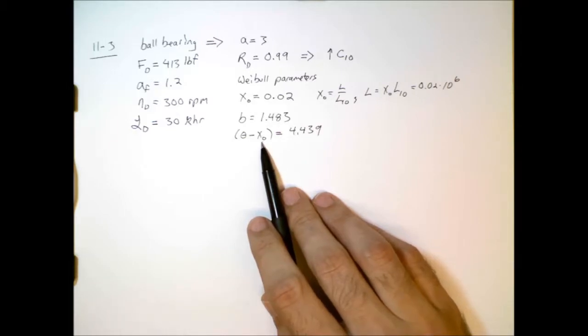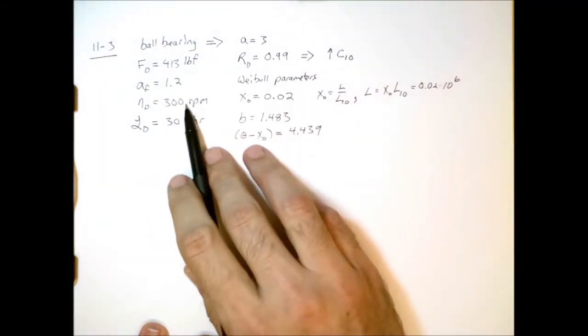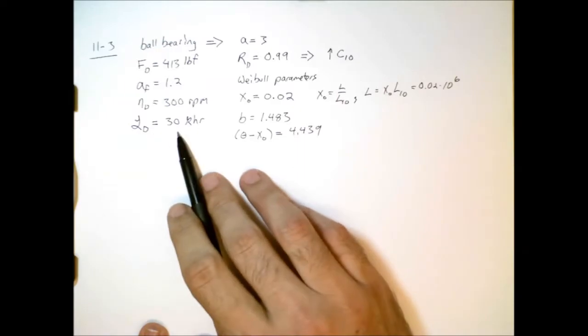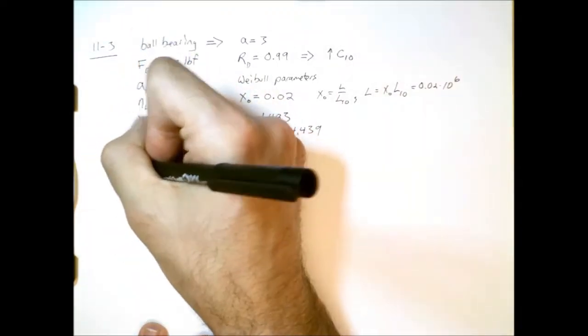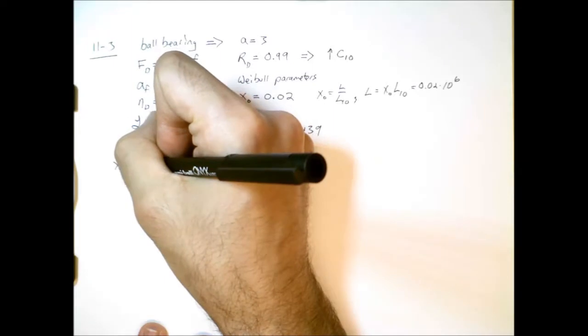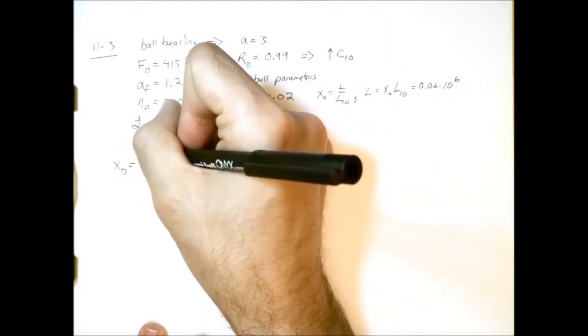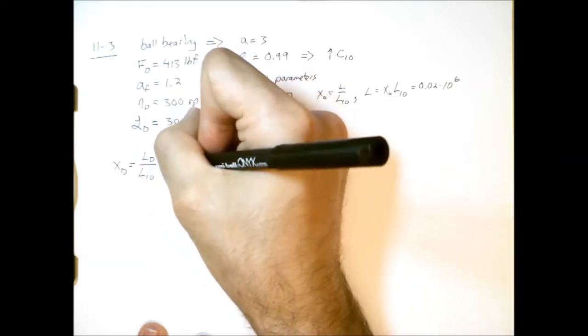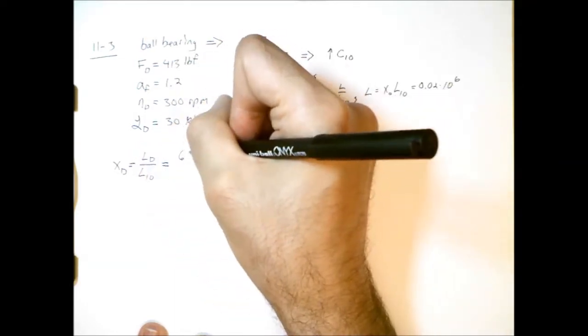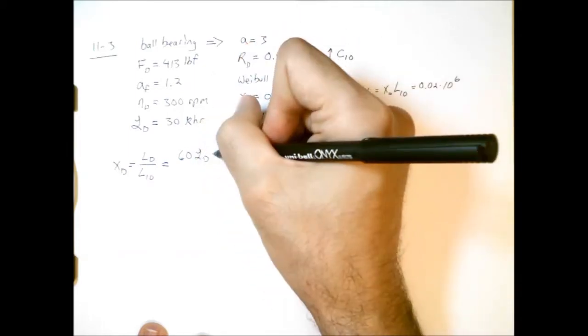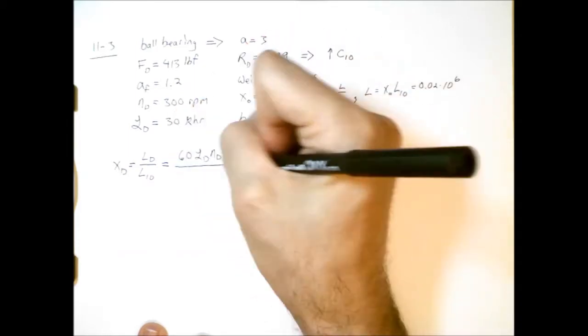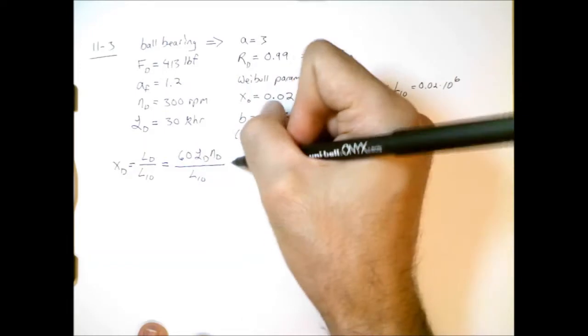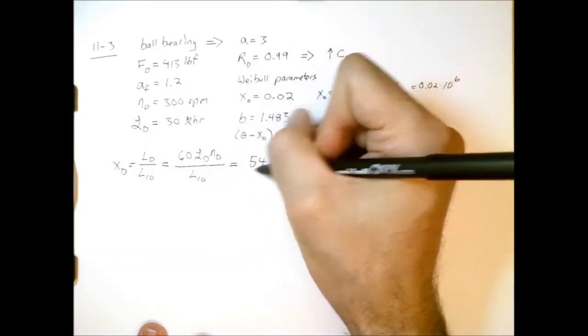So to use the formula we went through before, we need to know what the design non-dimensional life is. We're not told what that is. We know what the speed is and the design life in hours, so we need to convert that to the non-dimensional design life. So that's going to be equal to L sub d divided by L10, but L sub d, that's equal to 60 times the design life in hours times the speed, all divided by L10, and if we plug all of those values in, we get 540.